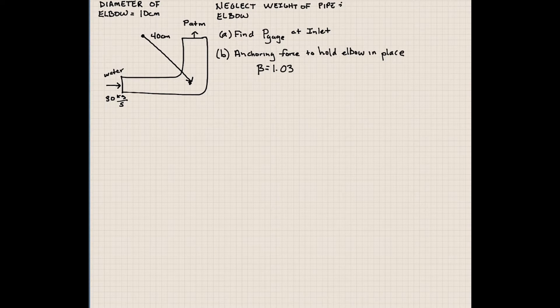What we want to find - let's go ahead and neglect the weight of the water and the elbow compared to the momentum flow. They're small. Let's find what the pressure at the inlet of this pipe is. And then once we know that, let's find what the force is that we need to restrain this setup.